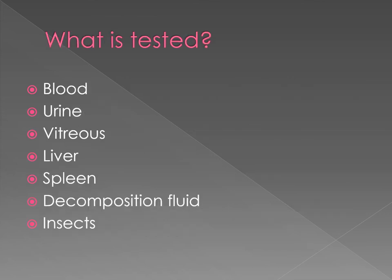The common body fluids that are tested in a medical examiner's lab and things that we extract from the body are mostly blood, urine, and vitreous from the eyes. We can take pieces of liver and spleen in bodies that we cannot extract blood and urine. The spleen is preferable over liver in our lab because the spleen filters out the blood, so it contains all that stuff that was in the blood.